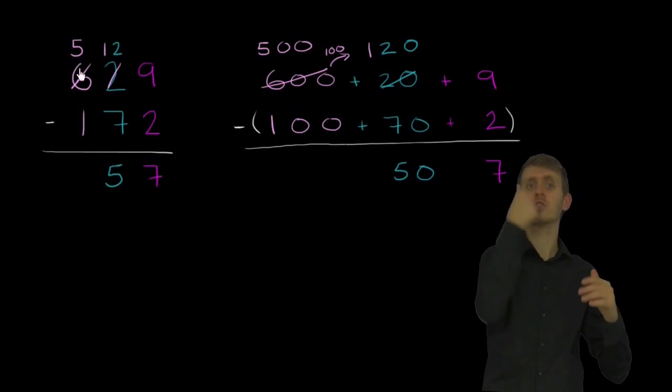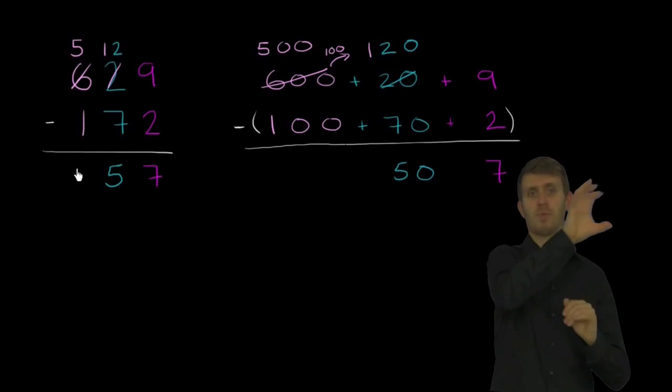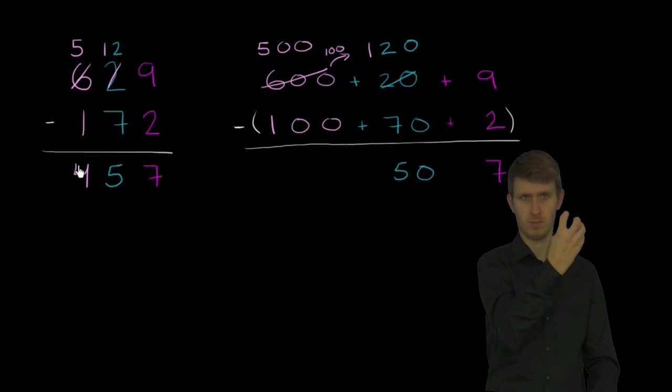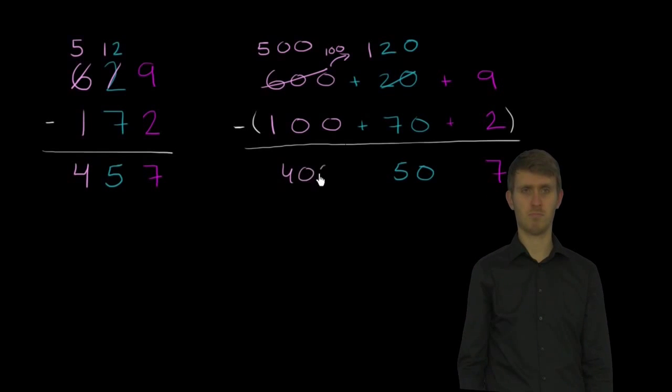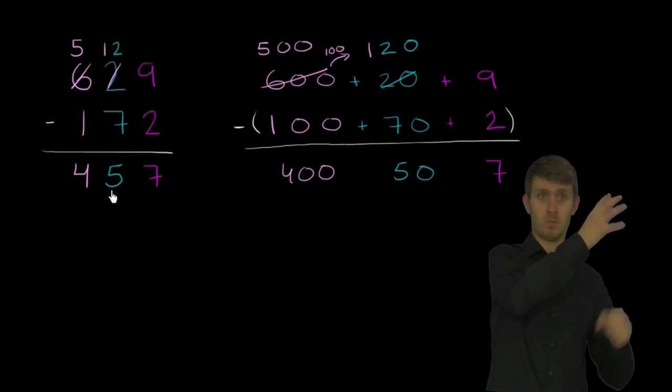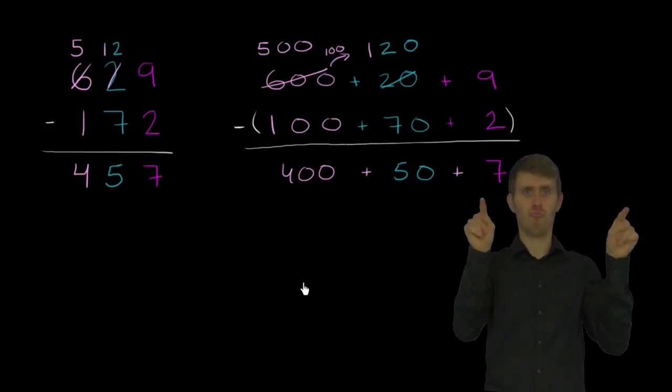And then finally, you have the hundreds place. 5 minus 1 is equal to 4. But that's really 500 minus 100 is equal to 400. 500 minus 100 is equal to 400. And so you get 457, which is the same thing as 400 plus 50 plus 7.